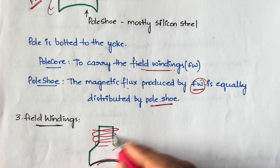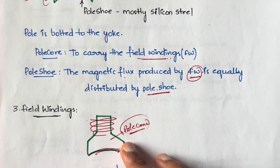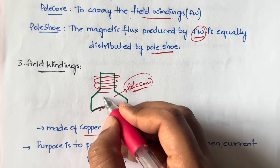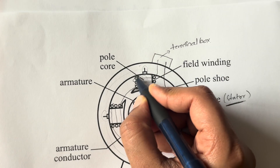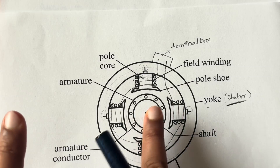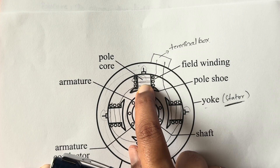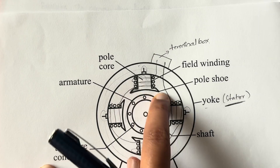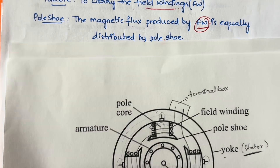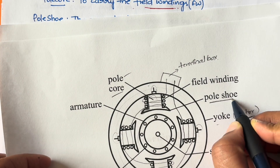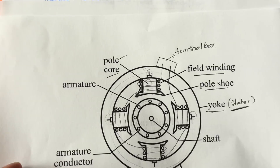The pole core is what the wires are wound around — you need something to wind the wires on, and that is the pole core. So the pole core carries the field windings, and the pole shoe distributes the magnetic field created by those field windings to other parts of the machine. With this we are done with the stator — in the stator we have the yoke, pole (pole core and pole shoe), and field windings.